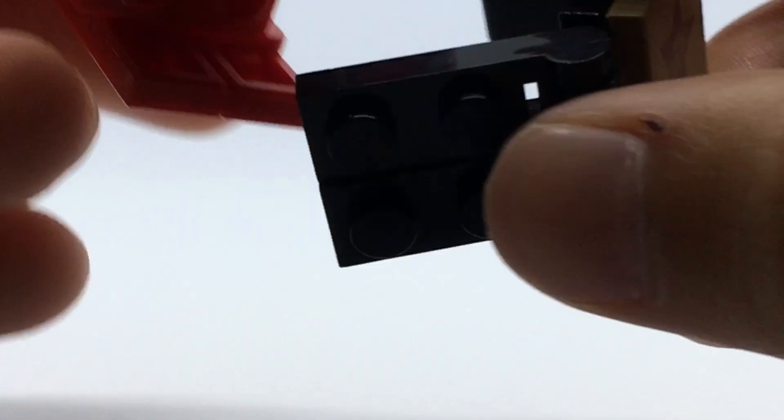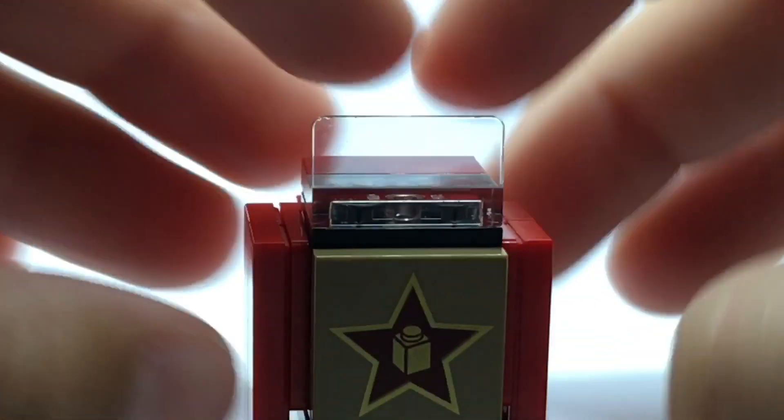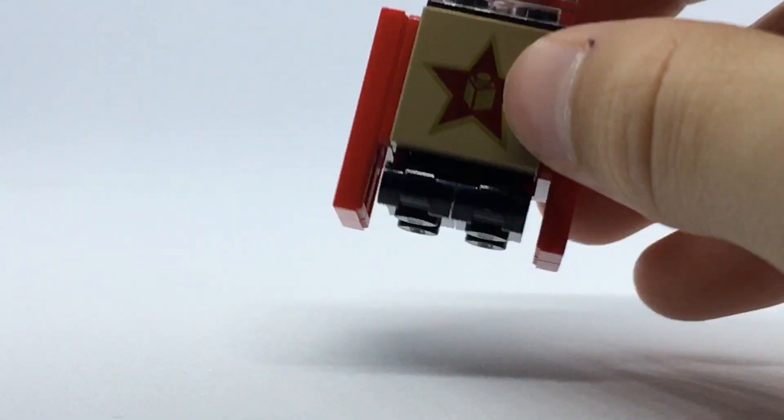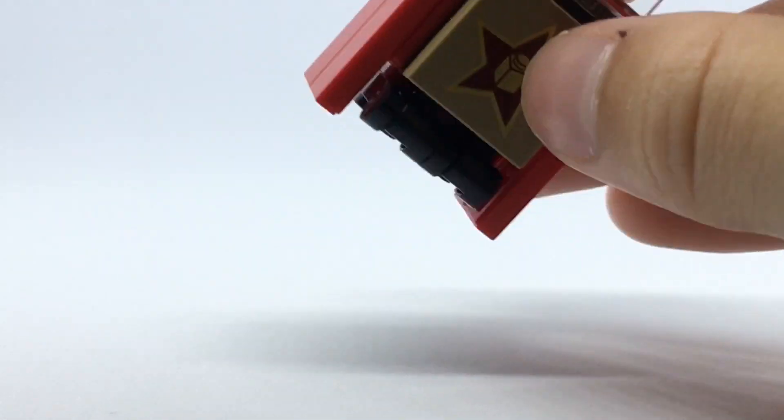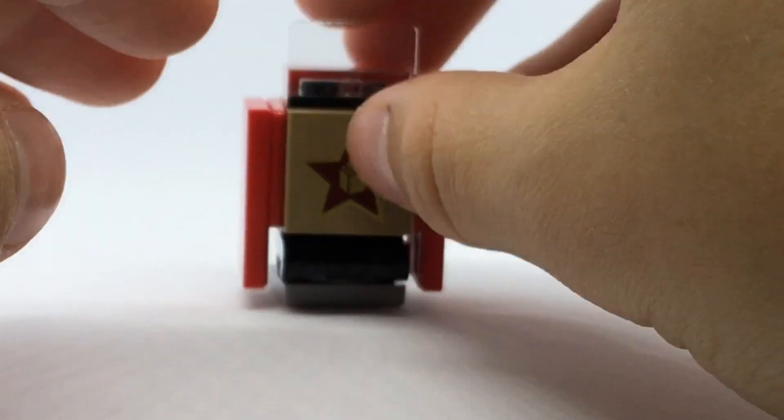I'm going to put that on there, and then this part goes on the bottom like that. It clips in. Now you can leave it like this, but I like to add a little stuff to make it taller and let it fit onto a Lego base plate.